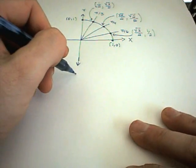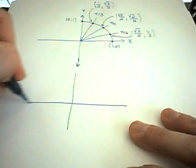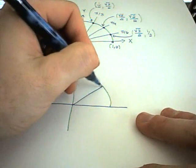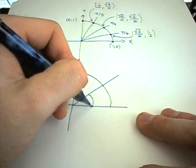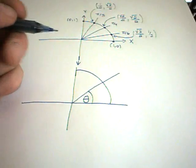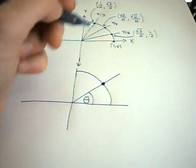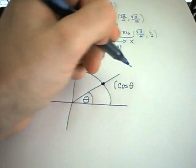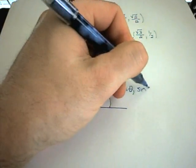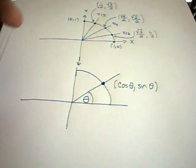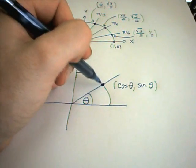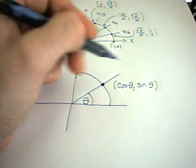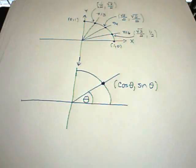When we talk about sine and cosine, we have some angle — we call our angle theta. Wherever the point on the graph is, we call that point cosine of theta comma sine of theta. So basically wherever this point is, cosine of theta equals the x-coordinate of that point, and sine of theta equals the y-coordinate of that point.